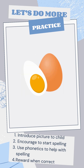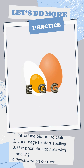Next one — what is this oval shape? Good, it's an egg! How do we spell egg? E, egg, G, G, egg. Great!